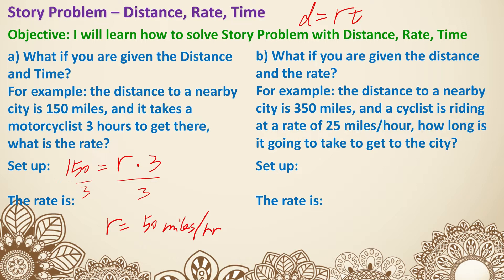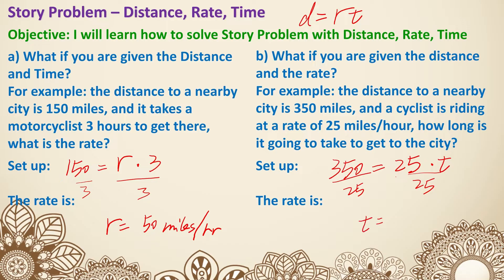Question B: what if you are given the distance and the rate? A cyclist is riding 350 miles at a rate of 25 miles per hour. How long will it take to get to the city? We set up 350 equals 25 times T, then divide both sides by 25. We get T equals 14 hours. That's how we use the formula to solve story problems.